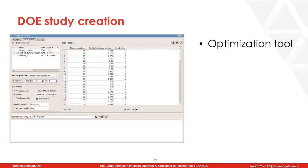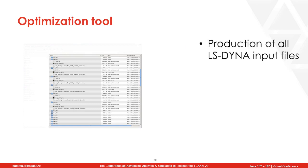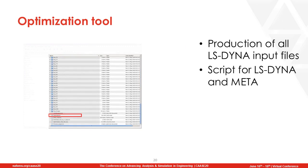After defining the responses, we go back to the optimization tool of ANZA to finish the DOE setup. By selecting a DOE algorithm — in our case the full factorial algorithm — we create all the experiments and can preview the design variables used in each experiment. Then all the LS-Dyna input files are created, and a script that will call LS-Dyna and META is generated to solve all the experiments and extract the results.